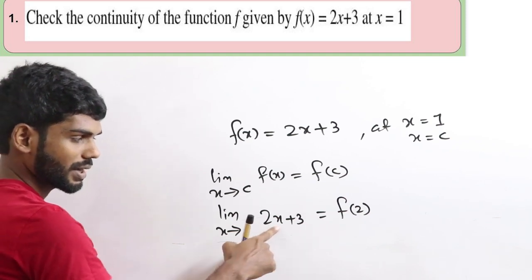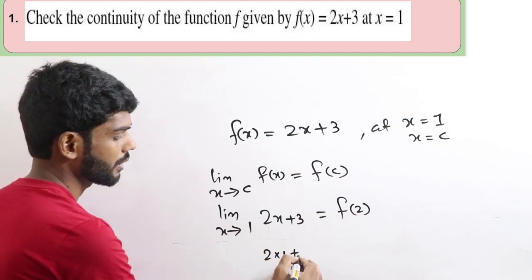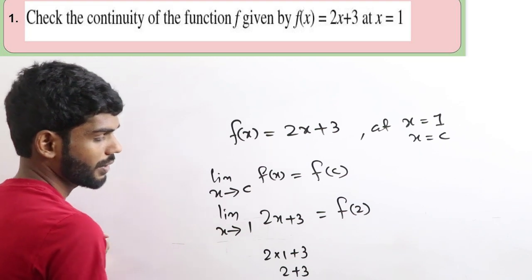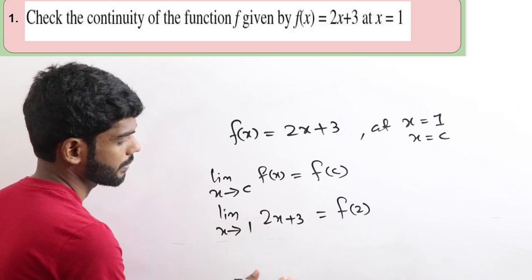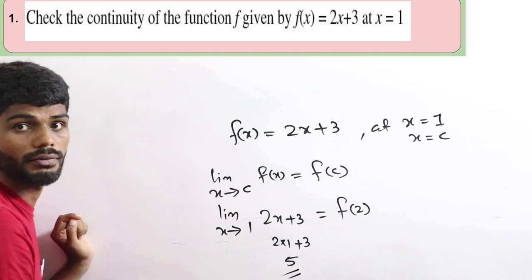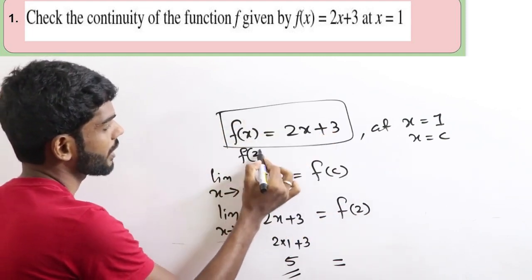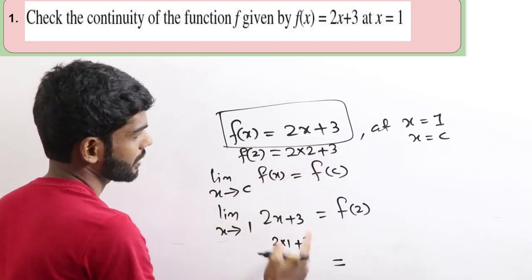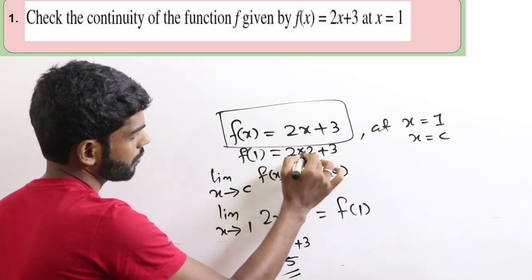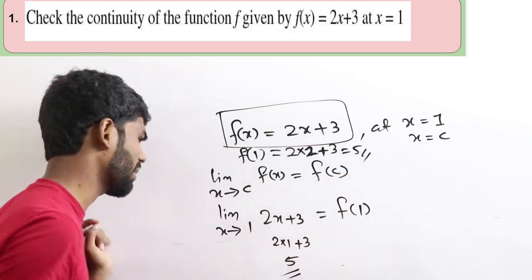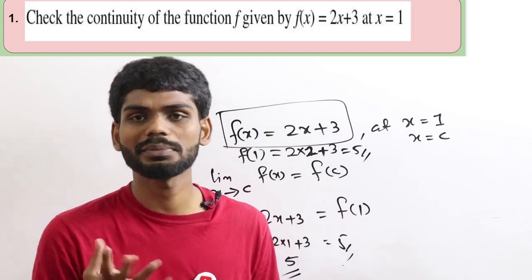We will apply limit x tends to c. Since this is a linear function, we simply substitute. So 2 into 1 plus 3 — the answer is 5. Simply, input x=1: 2 into 1 plus 3 equals 5. For the right-hand side, f of 1: 2 into 1 plus 3 equals 5.